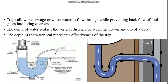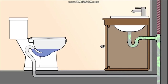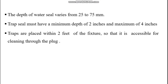Traps are U-shaped fixtures that have a water seal in them. The water in the trap creates a seal that prevents sewer gas from passing from the drain pipe back into the living quarters. Traps allow sewage or wastewater to flow through while preventing backflow of foul gases. The depth of the water seal is the vertical distance between the crown and dip of a trap, and it represents the effectiveness of the trap. The depth of the water seal varies from 25 to 75 millimeters, with a minimum depth of 2 inches and a maximum of 4 inches. Traps are placed within 2 feet of the fixture so that they are accessible for cleaning through the plug.